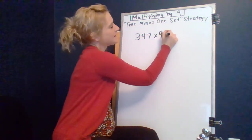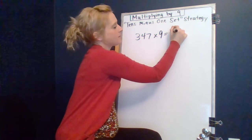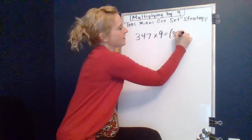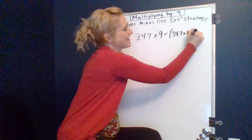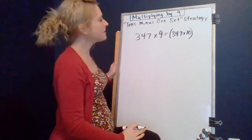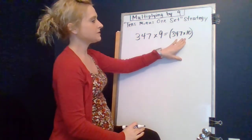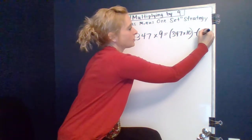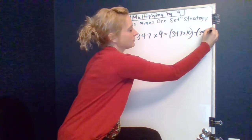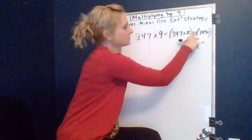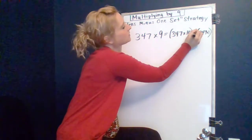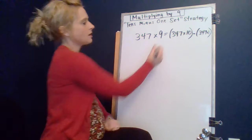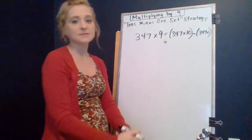So 347 times nine is the same as 347 times ten. You must still have a lot of room, that's OK. 347 times ten, but we need to subtract a group of 347. You guys see that? Is that a nice sign up?